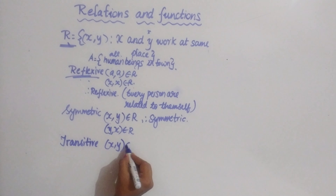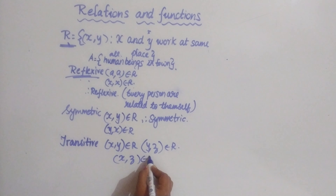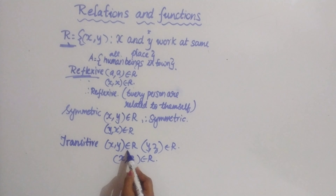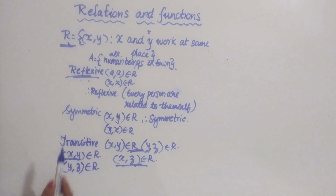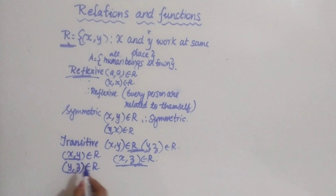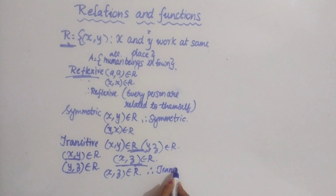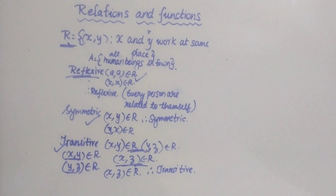For transitive: if (x, y) belongs to R and (y, z) belongs to R, then (x, z) should also belong to R. We consider both conditions — when (x, y) belongs to R, they work at the same place, and (y, z) belongs to R means y and z also work at the same place. Therefore x and z work at the same place, so it is transitive. As it is reflexive, symmetric, and transitive, it is an equivalence relation.